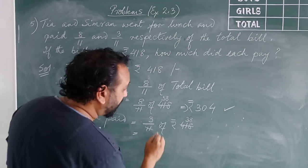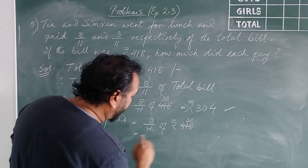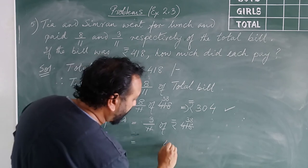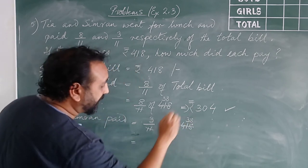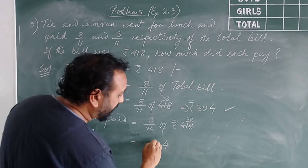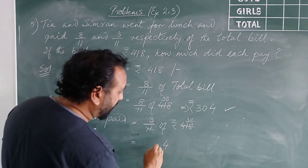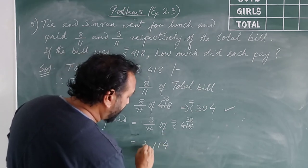Now 3, 8s are 24, carry 2, 3, 9, 10, 11. So 114.